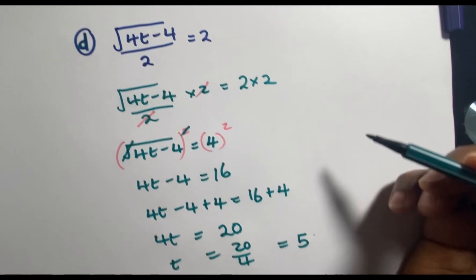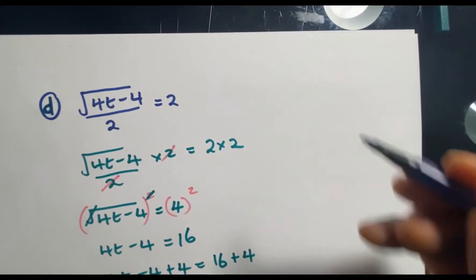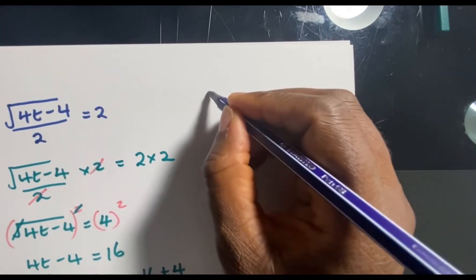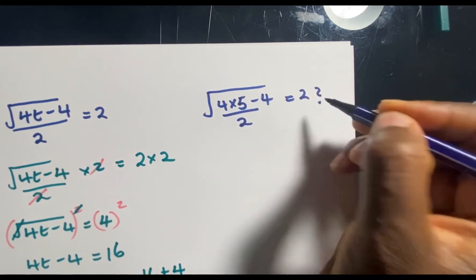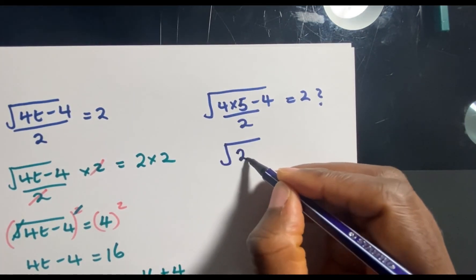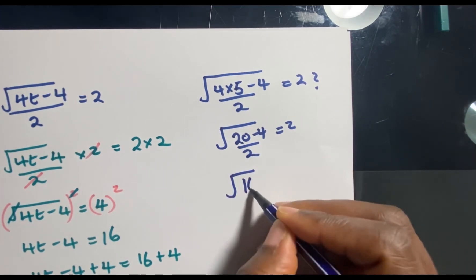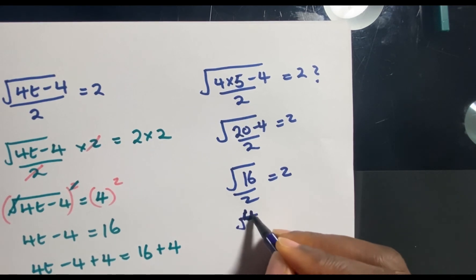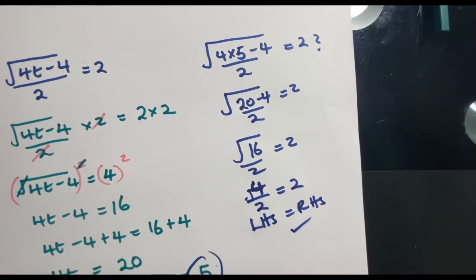One final thing — to check your answer is correct, plug the answer back into the original equation. We got t = 5, so let's verify: square root of (4 times 5 minus 4) over 2 = square root of 16 over 2 = 4 over 2 = 2. The left hand side equals the right hand side, so the equation is balanced and the answer is correct.